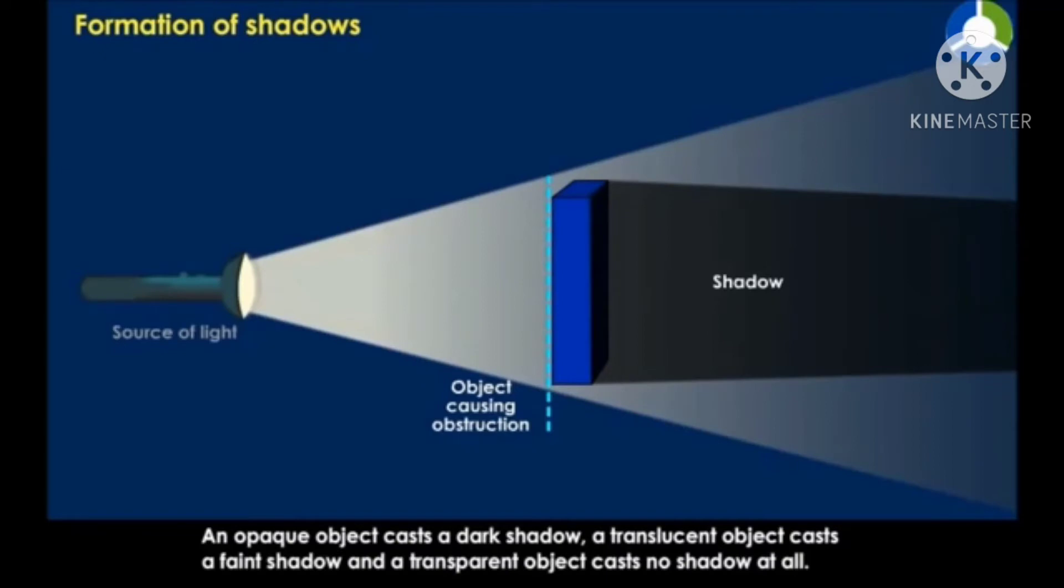An opaque object casts a dark shadow. A translucent object casts a faint shadow, and a transparent object casts no shadow at all.